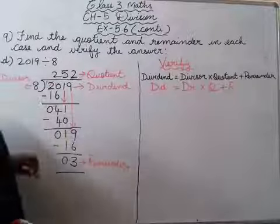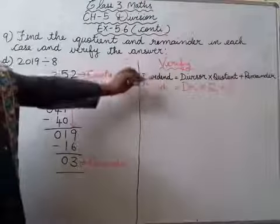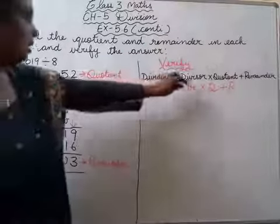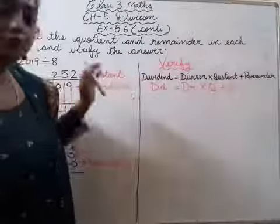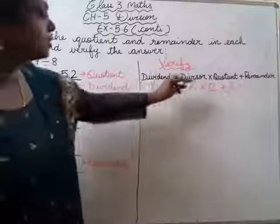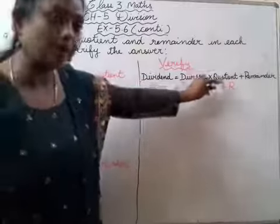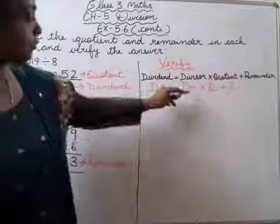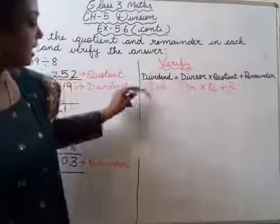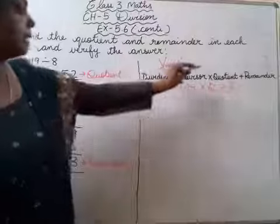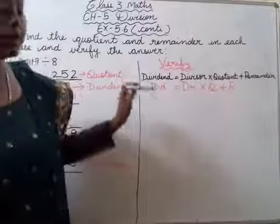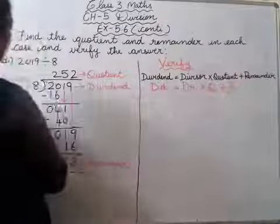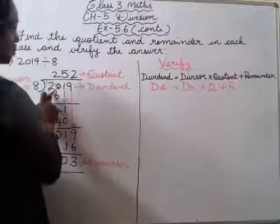We have finished this, but we have to verify the answer. So I have already written the formula. What is the formula? Dividend is equal to divisor multiplied by quotient plus remainder. I have written the short form also. Aapko jo easy hai woh likh sakte hai. So, dividend ismein kya hai? Dividend is 2019.